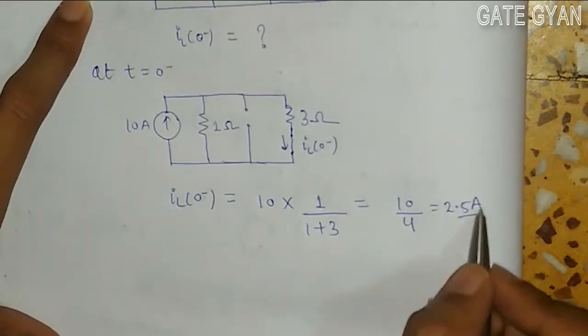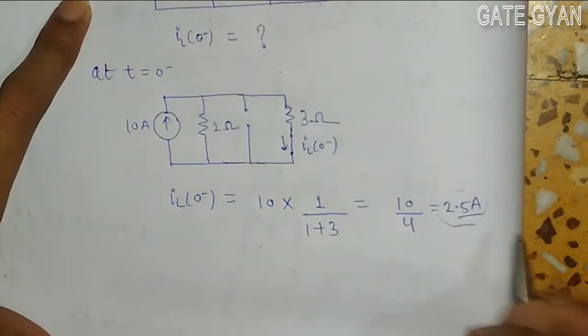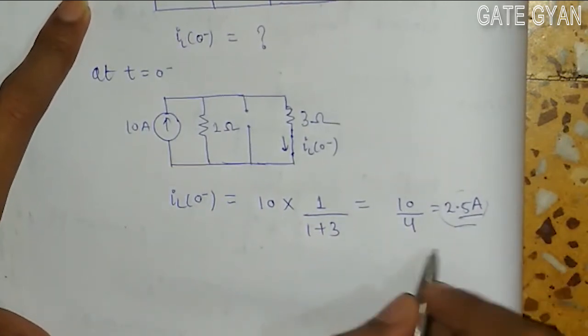But in the options, 2.5 ampere is not given. But this is our right answer. Thank you.